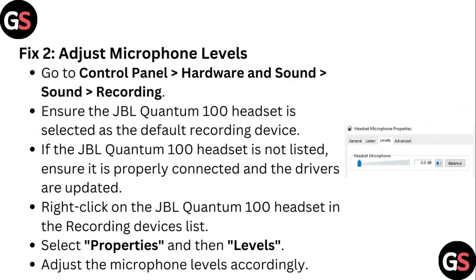Step 2: Adjust microphone levels. Go to Control Panel, Hardware and Sound, then Sound and Recording. Ensure the JBL Quantum 100 headset is selected as the default recording device and properly connected with drivers updated. Right-click on the JBL Quantum 100 headset in the Recording device list, then select Properties and then Levels. Adjust the microphone levels accordingly.